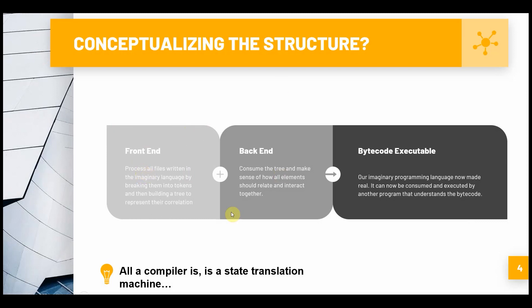Typically whenever you want to have a compiler, you want to make sure you have a front-end, a back-end, and a bytecode executable. All a compiler is is a state translation machine - don't over-complicate things. Compilers are very simple. All you're literally doing is converting one state to another state. You take text from a file and convert it into tokens, then convert those tokens into a tree to represent how they interact, then convert that tree into a class structure with functions and fields, then translate that into bytecode, and so on.